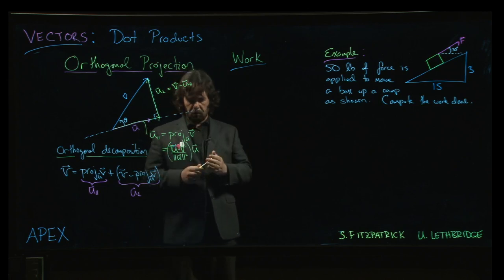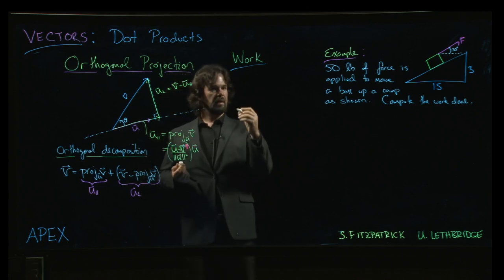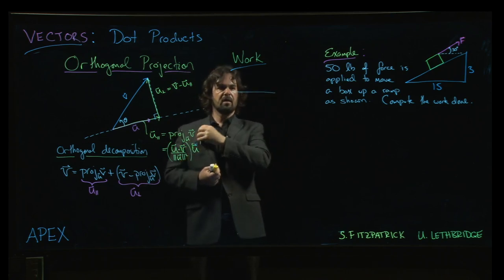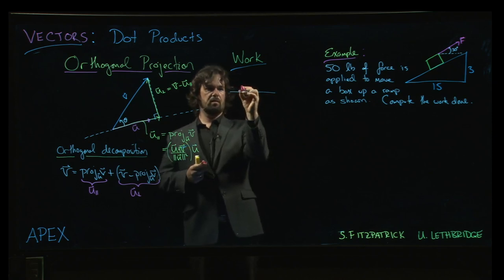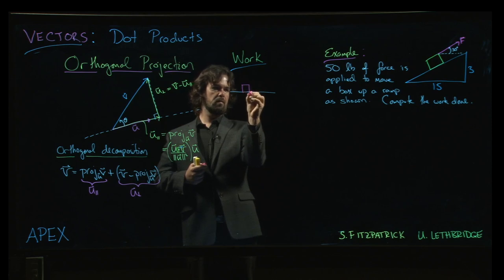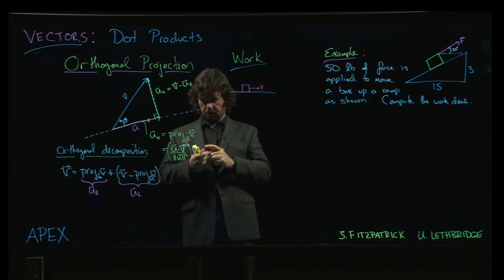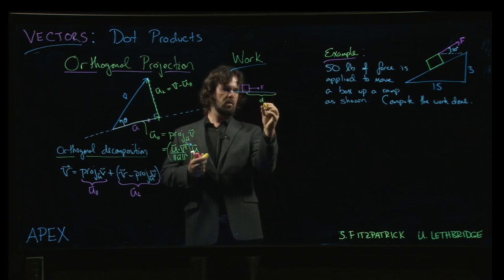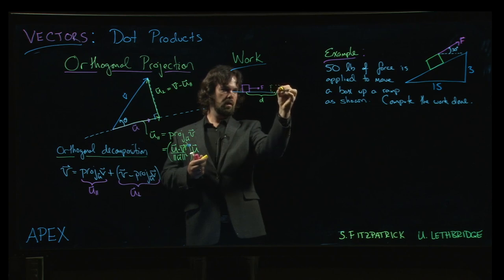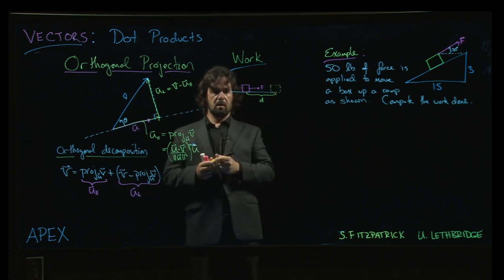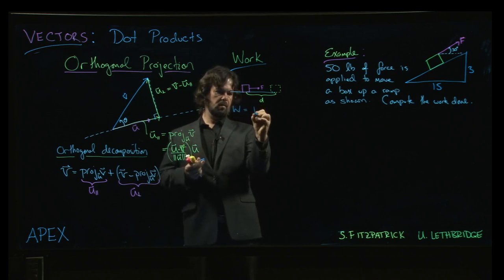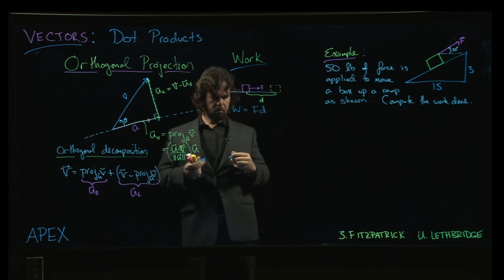So the most basic concept of work that you might see in a grade 10 or grade 11 physics class is you have an object sitting on the ground and you apply a horizontal force and you move that object over some distance d so it ends up at a new position. And the formula for work is just force times distance. Okay, all right, fair enough.